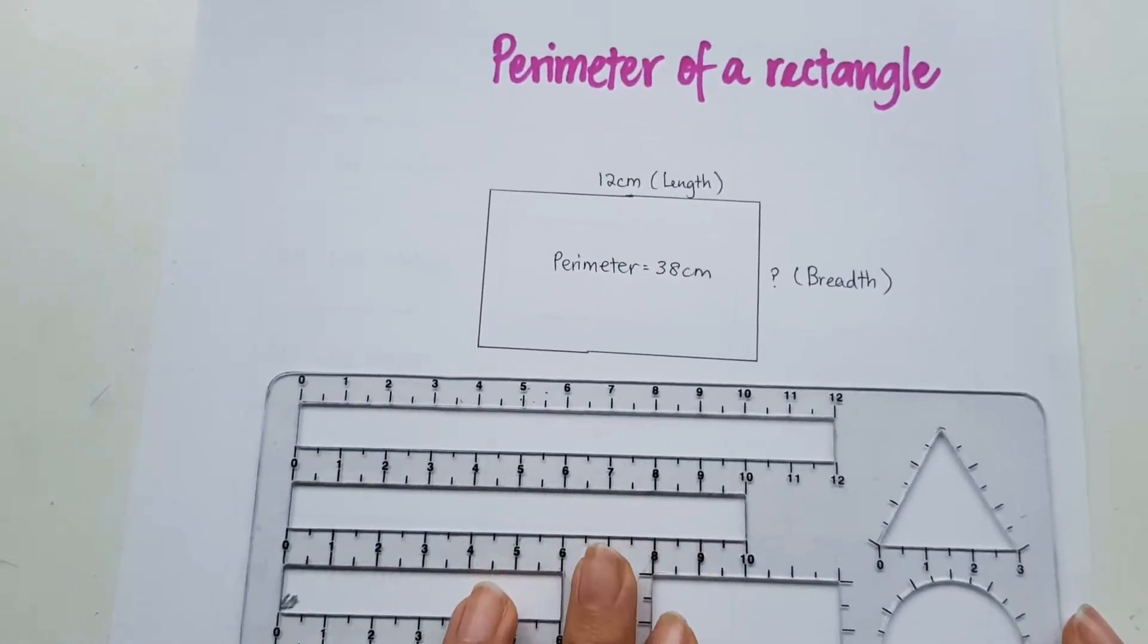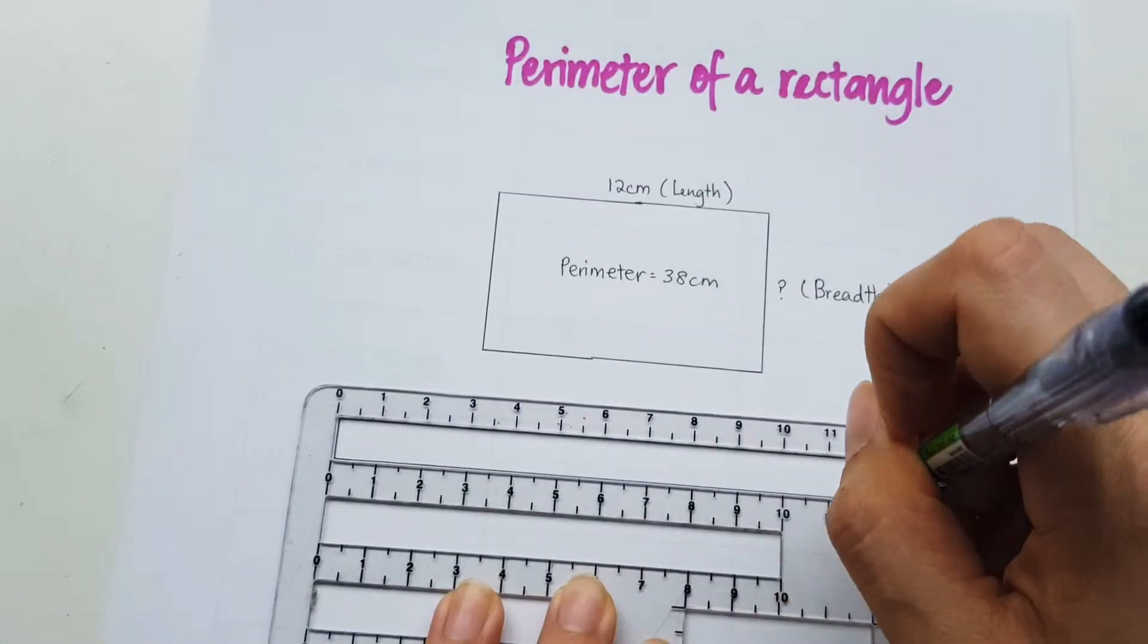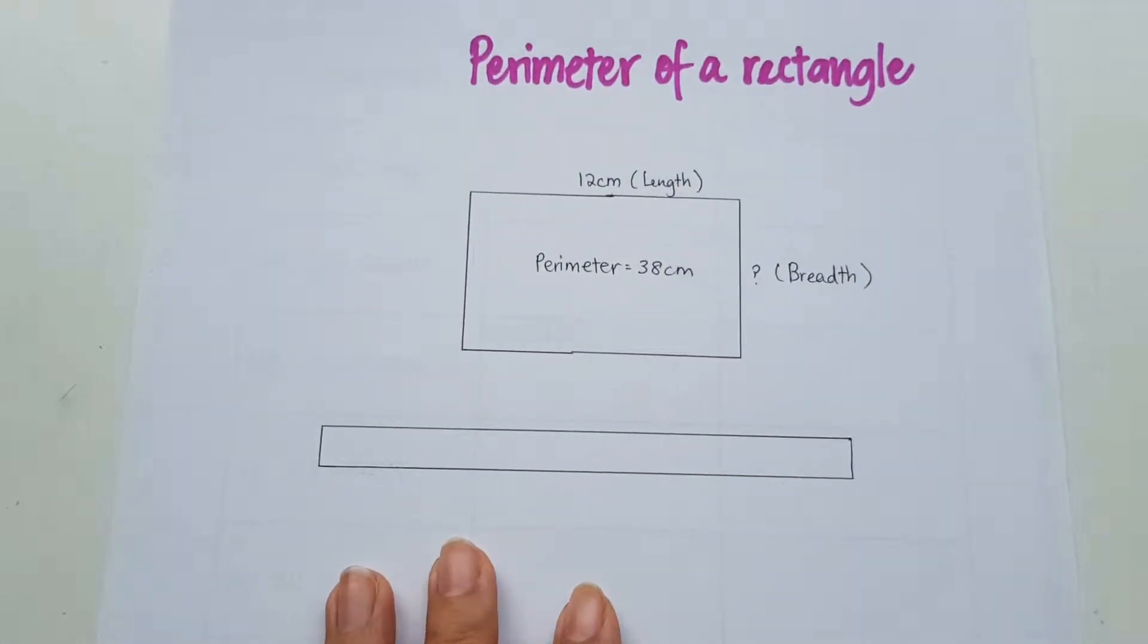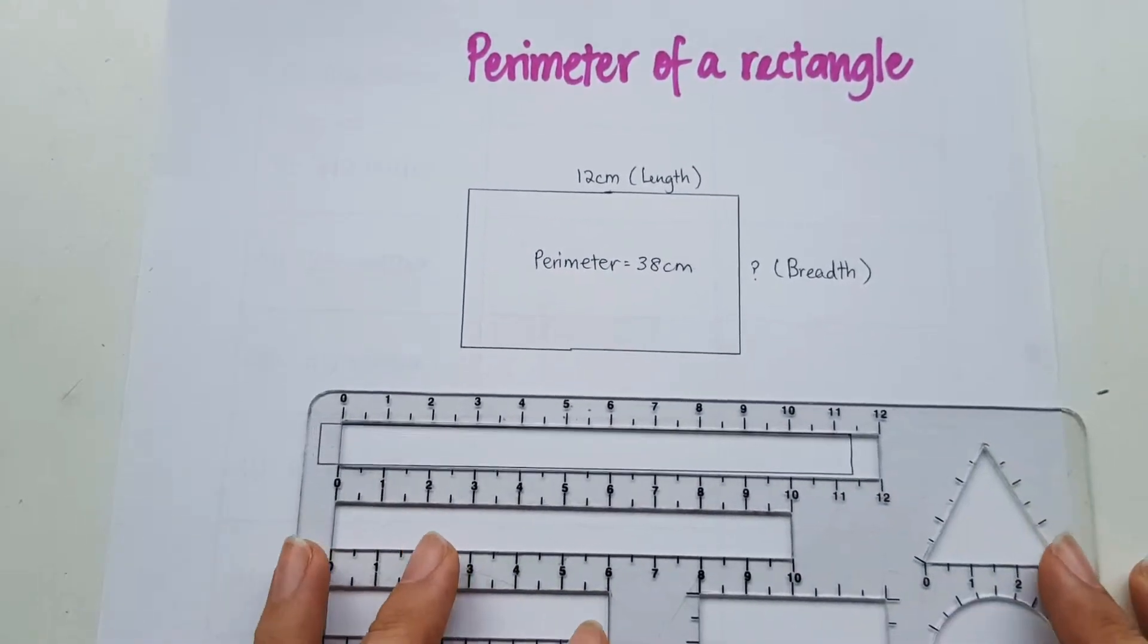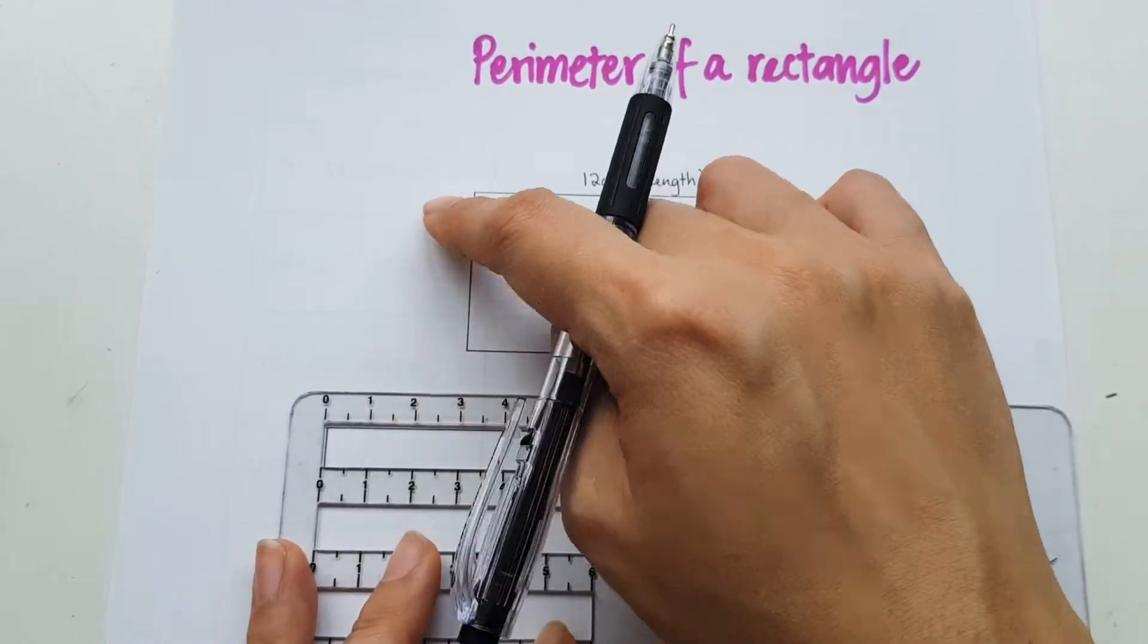So I'm going to draw a model for this. And it's going to look something like that. So this whole bar is going to represent the perimeter. And to find the perimeter, we actually add up the length, the breadth, the length and the breadth again.